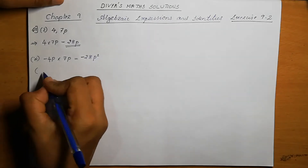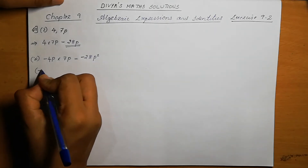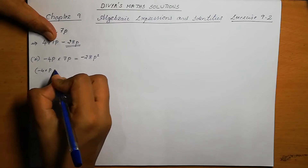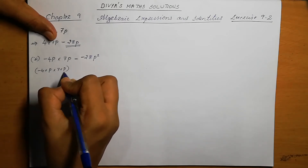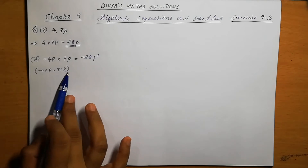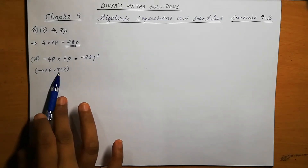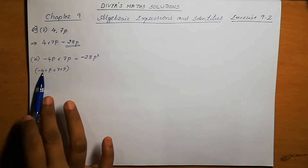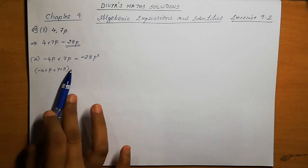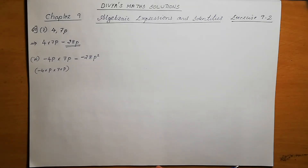If you have doubt: minus 4p means minus 4 into p, and 7p means 7 into p. So the numbers we multiply: minus 4 into 7 is minus 28, and p into p is p square. So the answer is minus 28p square.